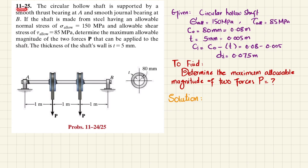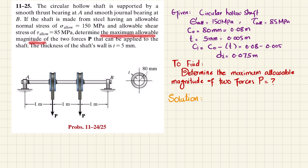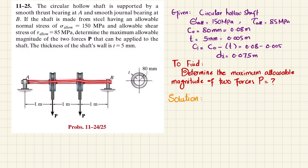Welcome back. Problem 11-25. The statement is: a circular hollow shaft is supported by a smooth thrust bearing at A and a smooth journal bearing at B. The shaft is made from steel having allowable normal stress of 150 MPa and allowable shear stress of 85 MPa. Determine the maximum allowable magnitude of two forces P that can be applied to the shaft. The thickness of the shaft wall is 5 millimeters.